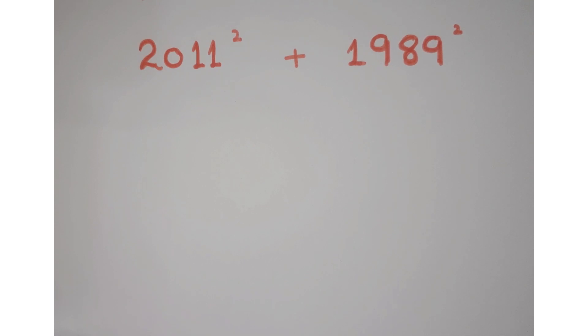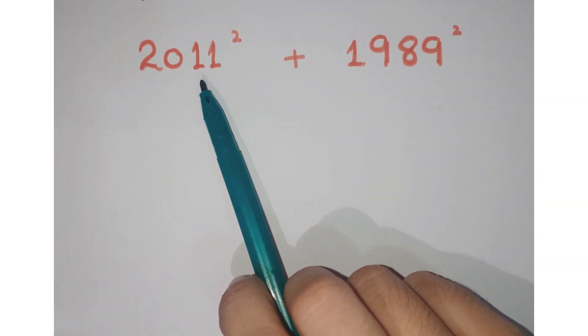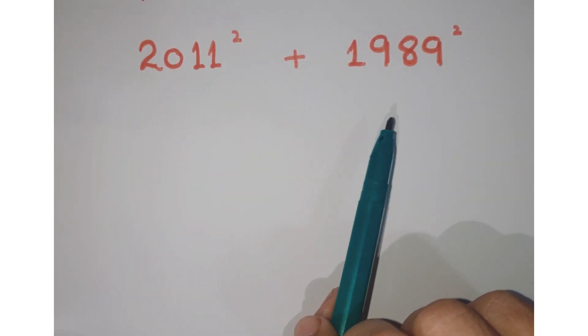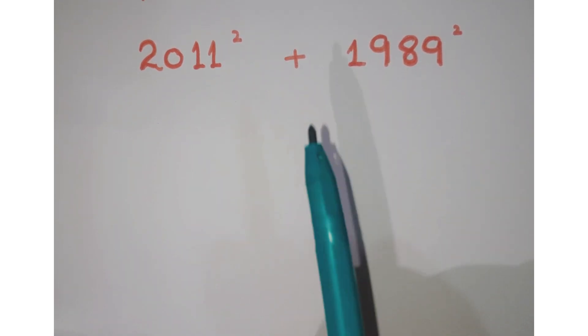Hello friends, welcome to the learning curve. Now look at this question and we have to simplify it. The question is 2011 square plus 1989 square and we have to simplify it without using a calculator.